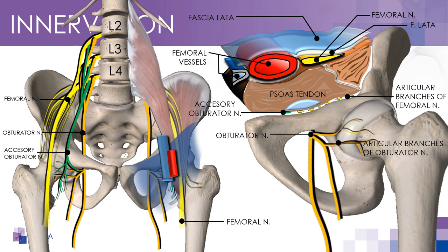The articular branches of the obturator nerve arise from the common obturator nerve, the anterior or posterior divisions of the nerve — most frequently the posterior one — and supply the hip joint capsule along the inferior and superior borders of the acetabulum. These branches also provide motor innervation through the obturator externus muscle. The accessory obturator nerve arises from the ventral rami of L3 and L4, travels through the pelvis along the medial border of the psoas muscle, and then passes between the obturator externus and adductor brevis muscles, entering the adductor magnus muscle.